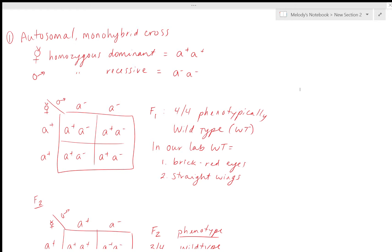We're going to go over the autosomal monohybrid cross, the autosomal dihybrid cross, and the sex-linked cross. For the first one, the autosomal monohybrid cross, we started with virgin females — that's the regular female sign with a little V on top. Those were all homozygous dominant and the males were all homozygous recessive. Using the letter A: homozygous dominant is a+ a+ and homozygous recessive is a− a−. Those are the parentals.